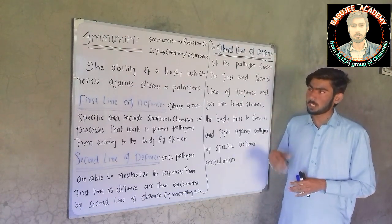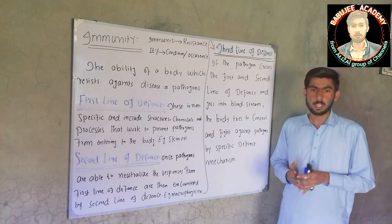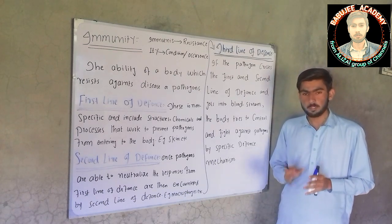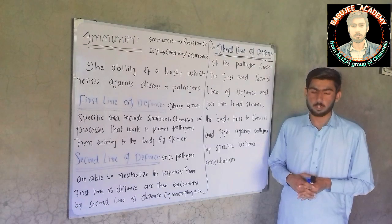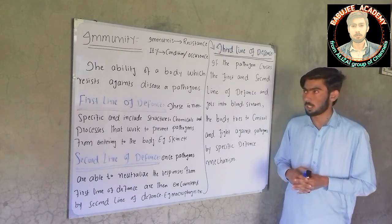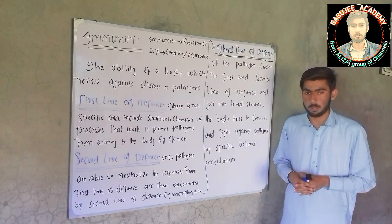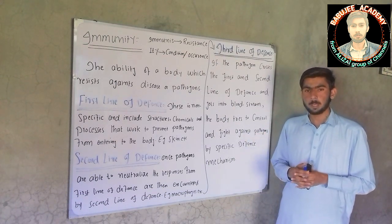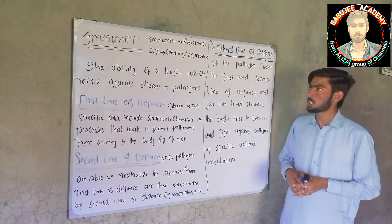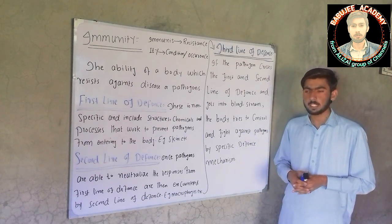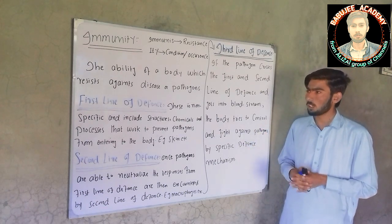We will study what is immunity, what is immunology, what is the immunity system and how our immunity system works. The word immunity is derived from 'immunis' — 'immunis' means resistance, and '-ity' means that conditions or occurrence.